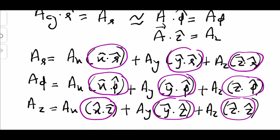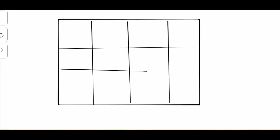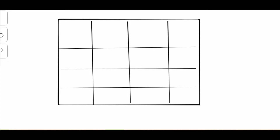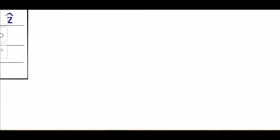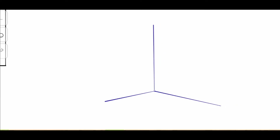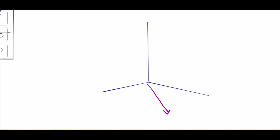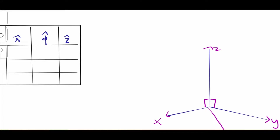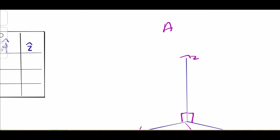Let's compute the actual dot products of these coordinate axes. We have X, Y, Z in Cartesian on one axis and R, phi, Z on the other — this forms our dot product table. We consider the right-handed Cartesian coordinate system with our unit testing vector R̂. A typical dot product A·B equals AB cosθ, and since we are dealing with unit vectors, it reduces to just cosθ.